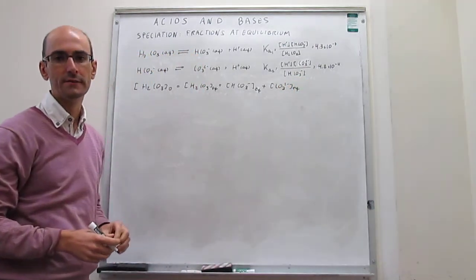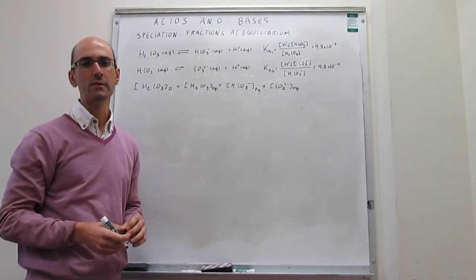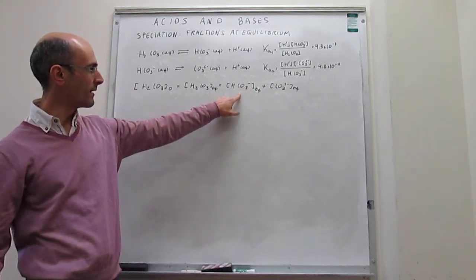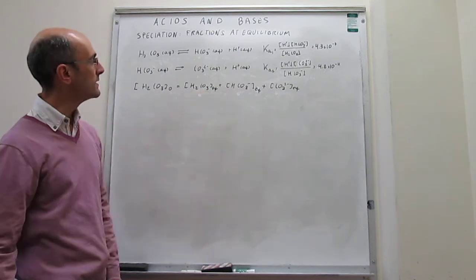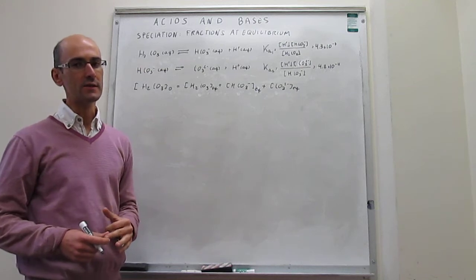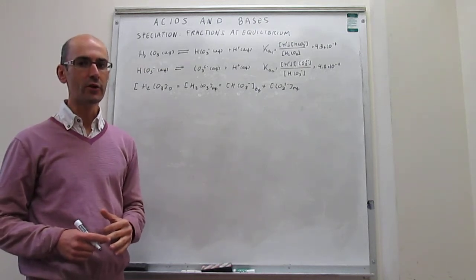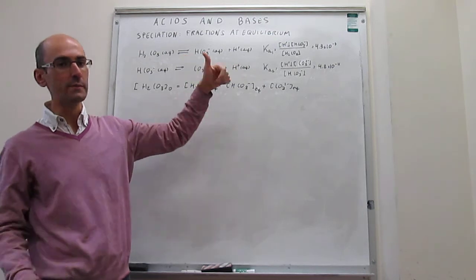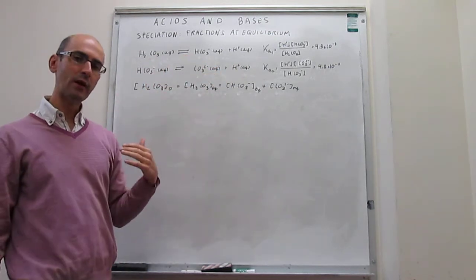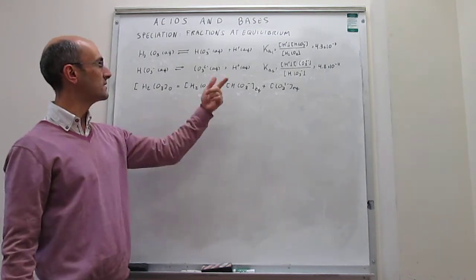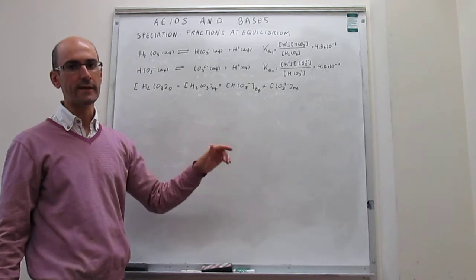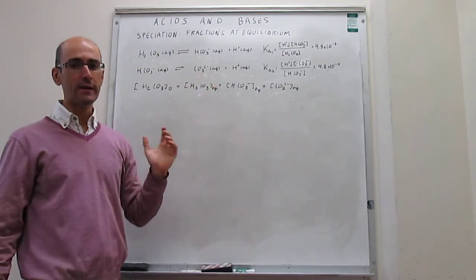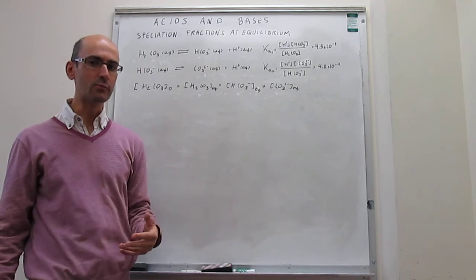This is called the mass balance of the species, and the question in this video is one about speciation. Which species is more important — do we have more carbonate, more bicarbonate, or more carbonic acid? Since all of these are acid-base equilibria, this depends on the pH. At very high pH, all equilibria shift left and carbonic acid is the most dominant species. At very low pH, the acids dissociate and bicarbonate becomes most abundant. At intermediate pH, bicarbonate is the dominant species.